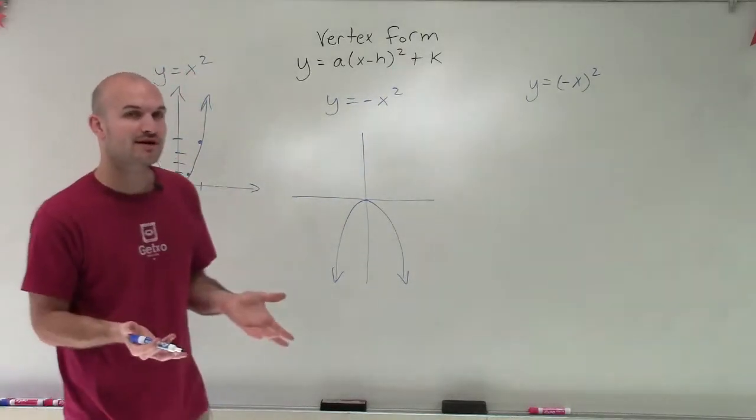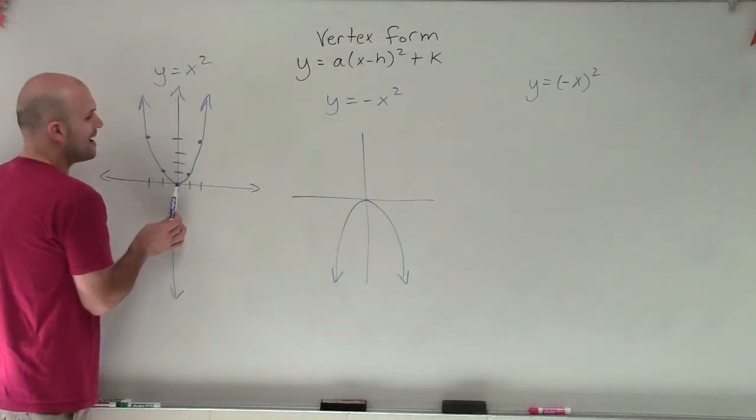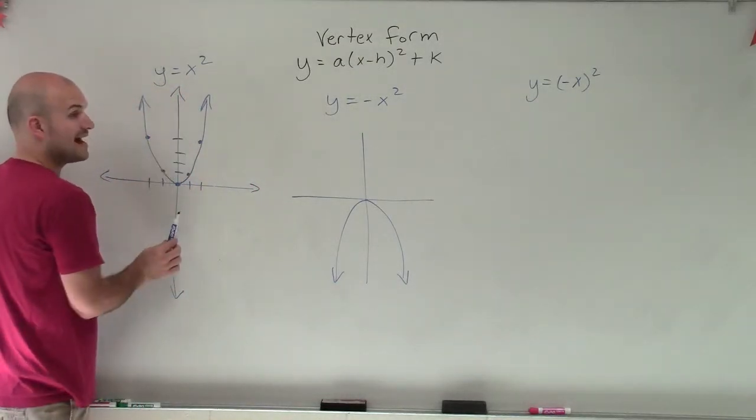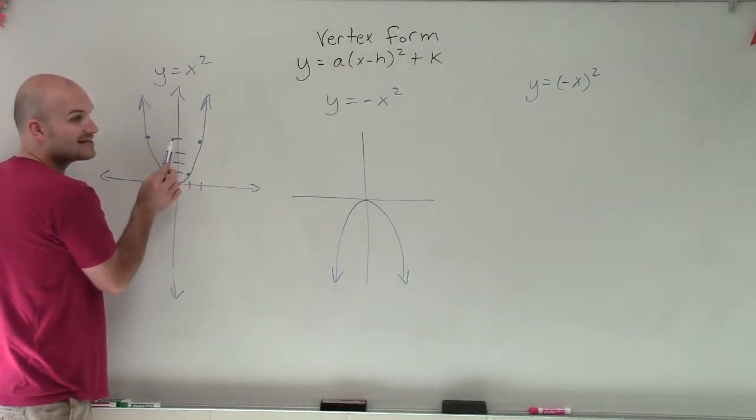And what's really important about this to understand is when we look at this parent graph, our graph is reflected about the y-axis already. You can see that the axis of symmetry here is x equals zero.